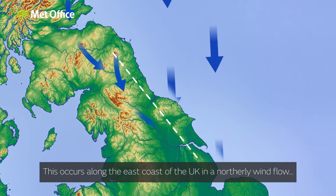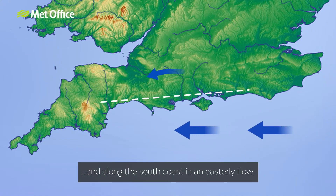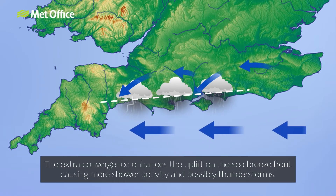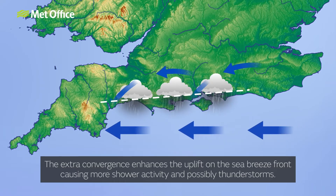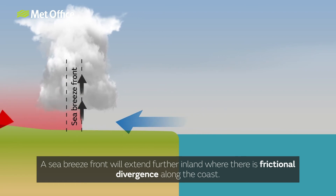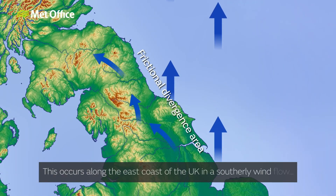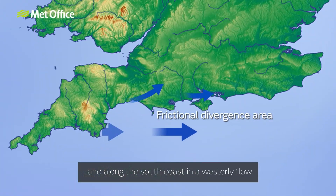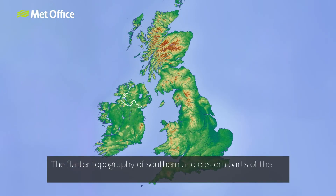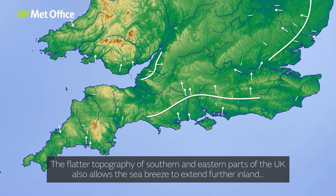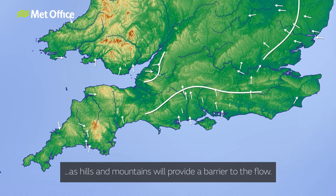This occurs along the east coast of the UK in a northerly wind flow and along the south coast in an easterly flow. The extra convergence enhances the uplift on the sea breeze front, causing more shower activity and possibly thunderstorms. A sea breeze front will extend further inland where there is frictional divergence along the coast, occurring along the east coast of the UK in a southerly wind flow and along the south coast in a westerly flow. The flatter topography of southern and eastern parts of the UK also allows the sea breeze to extend further inland, as hills and mountains provide a barrier to the flow.